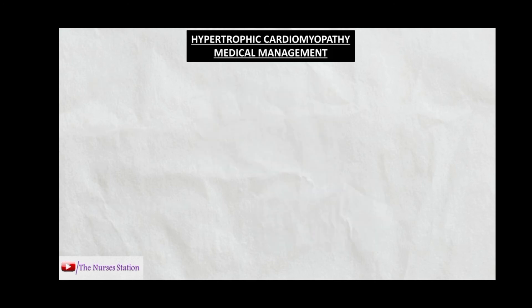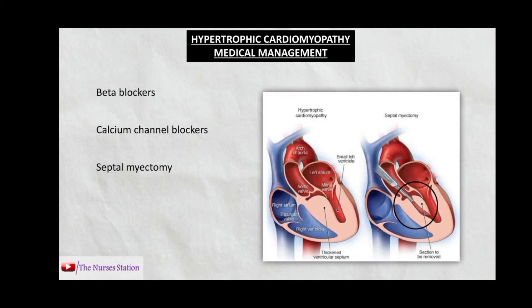Medical management of hypertrophic cardiomyopathy includes beta blockers and calcium channel blockers. Septal myectomy is a surgical procedure to remove the hypertrophied area by excision. Septal ablation involves infusing alcohol into the hypertrophied area via catheter — alcohol is toxic and causes heart muscle cells to shrink and die, and the remaining scar tissue is thinner than the original heart muscle.